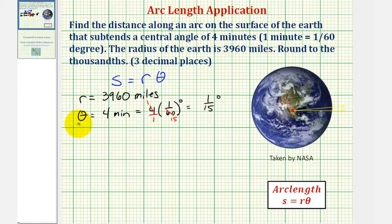But now we need to convert the angle in degrees to radians. So our angle theta would be equal to one-fifteenth of a degree times, to convert from degrees to radians, we multiply by pi divided by one hundred eighty degrees.